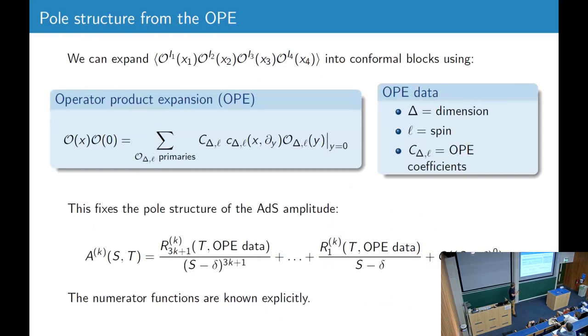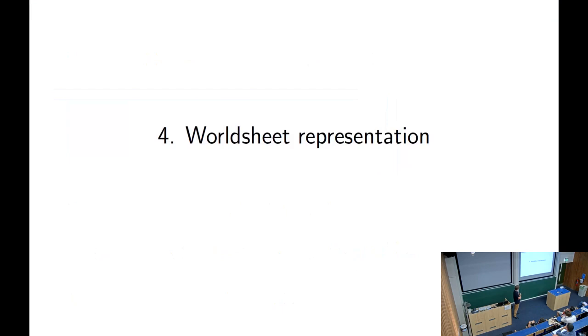Okay, so now let's look at the pole structure. We can take the correlator and do the conformal block expansion to write it in terms of this OPE data. And if we take this and transform it to the AdS amplitude, we find that the k-th curvature correction has to have this pole structure. So there are poles up to order 3k plus 1 where the numerator functions are explicitly computable in terms of OPE data. So the OPE data is mostly unknown. We know just the flat space limit and then there are... What's capital T? Capital T is, S and T are dimensionless Mandelstam variables.